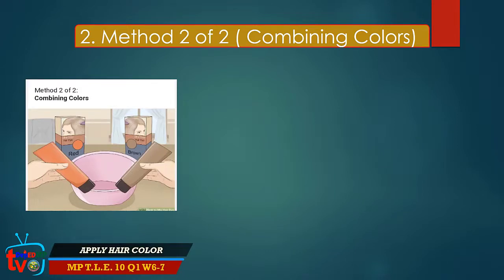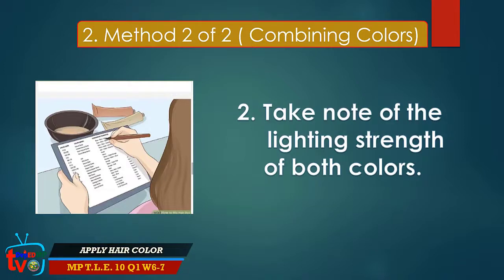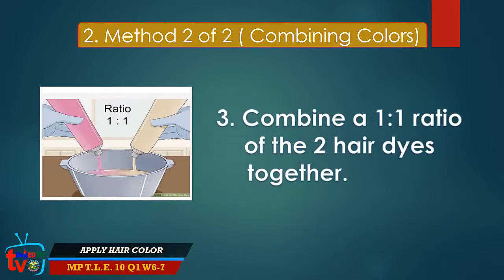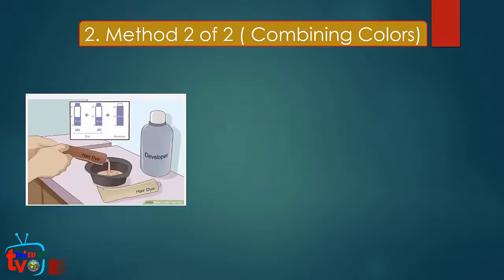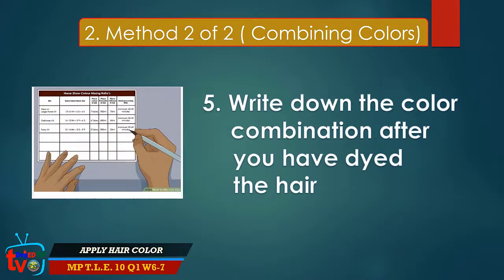Method 2 of 2 — Combining colors. Step 1: Take 2 complementary colors from the same brand to mix together. Step 2: Take note of the lighting strength of both colors. Step 3: Combine a 1-to-1 ratio of the 2 hair dyes together. Step 4: Mix together the 2 different hair dyes you have already combined, then add the developer. Step 5: Write down the color combination after you have dyed the hair, so you can replicate it easily in the future.